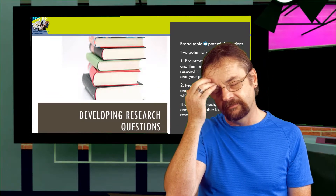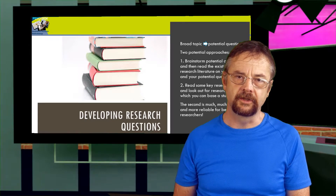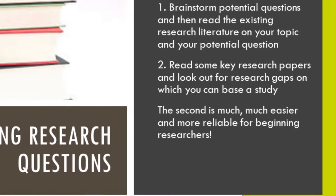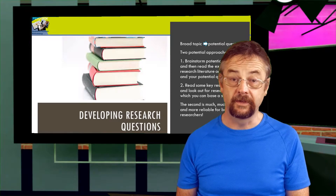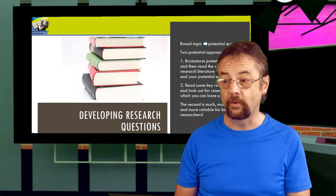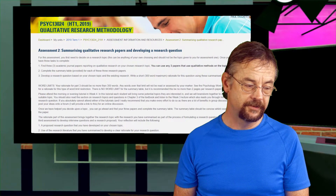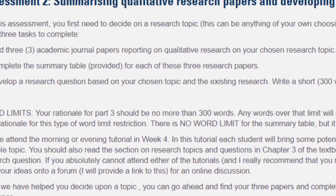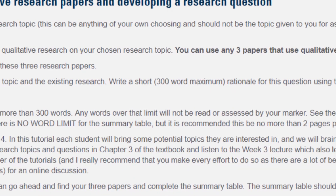Brainstorming really should only be engaged in if you already have a thorough understanding of the research literature on your topic. The second way to go about finding your research question is to read key research papers on the topic and see if you can find a gap in the literature — is there a question that appears not to have yet been answered? This is probably the way you'd be working for around the first five or even ten years of your research career. For assessment 2, your task is to find three research papers on a topic of your choosing and then develop a research question from those papers to see if you can find a question that hasn't yet been properly addressed.